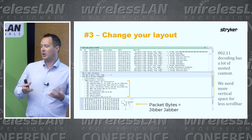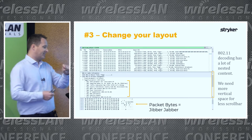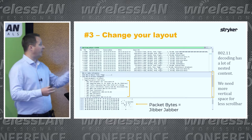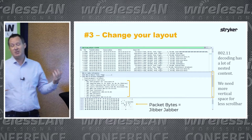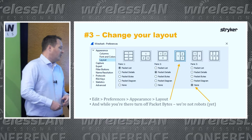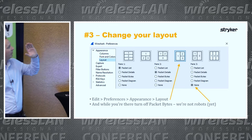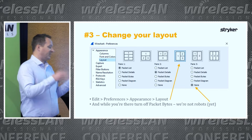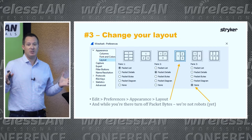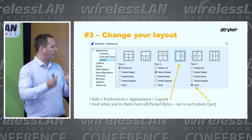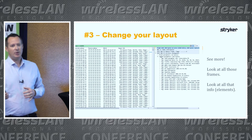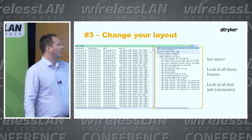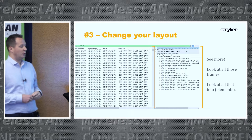Tip number three: change your layout. The default Wireshark layout is not good for packet analysis — you get a skinny window at the top that doesn't show many frames, a skinny window in the middle, and a bottom window that's mostly jibber jabber. Change to the layout with pane one down the left side and panes two and three stacked on the right, but disable pane three entirely. That gives you a full column of frames on the left and all the frame contents you need on the right without excessive scrolling.